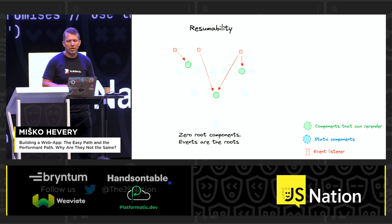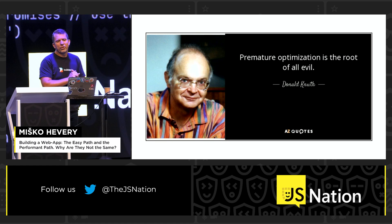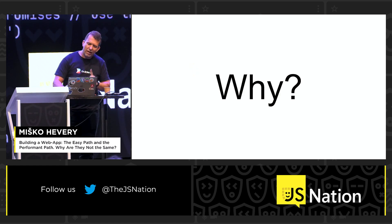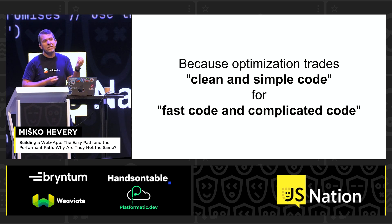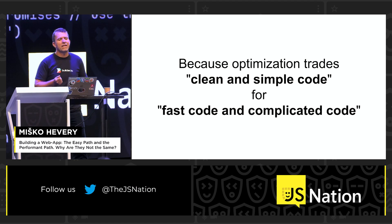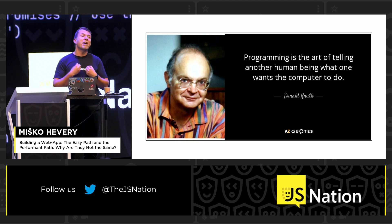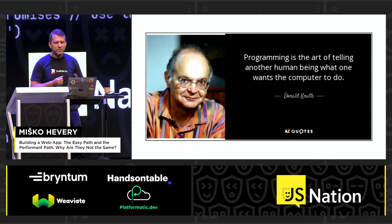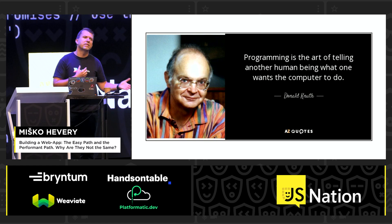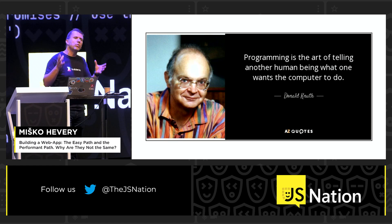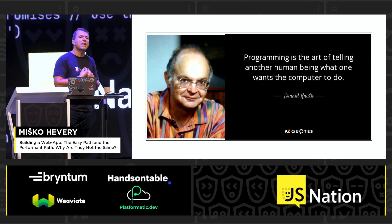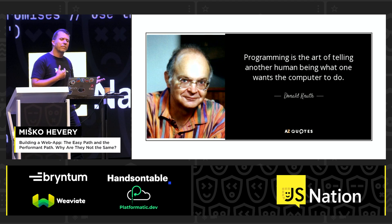Even if you have the most complicated application in the world, if you click the add-to-cart button, the only thing you have to do is talk to the shopping cart and re-render the shopping cart. The fact that you have a complicated menu or complicated commenting component doesn't matter — it is irrelevant to what the user is trying to achieve. I'm sure you've heard that premature optimization is the root of all evil. The reason is that clean code is simple code, whereas fast code is complicated. What you're trading when you make something fast is simplicity for something complicated. We write code primarily for other humans.